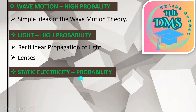Next is Static Electricity, also written in green with 'high probability,' meaning it is not a key topic. In this year's exam you can expect questions to be there because in the last ended GCE exam there was no question from static electricity.